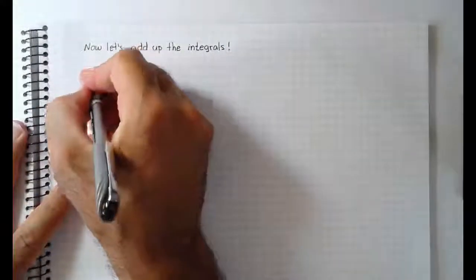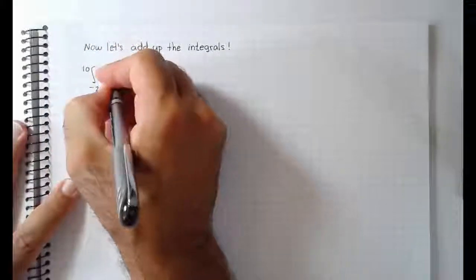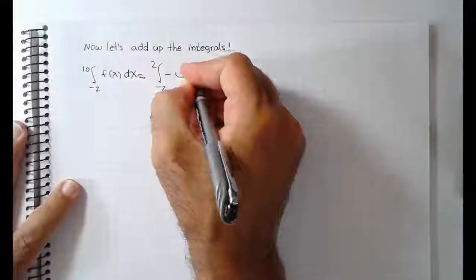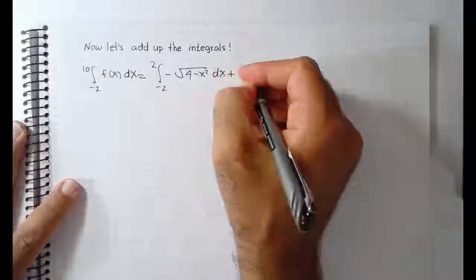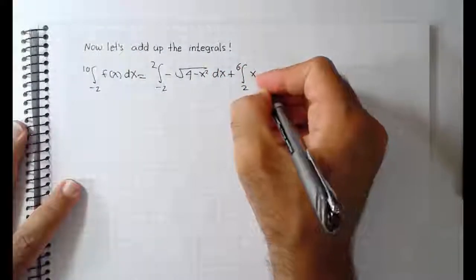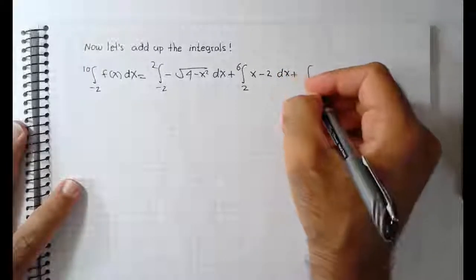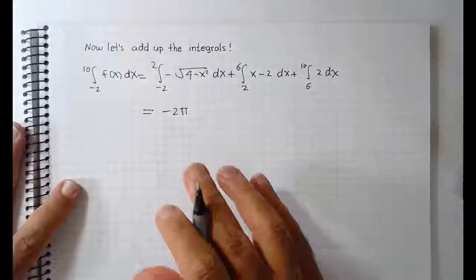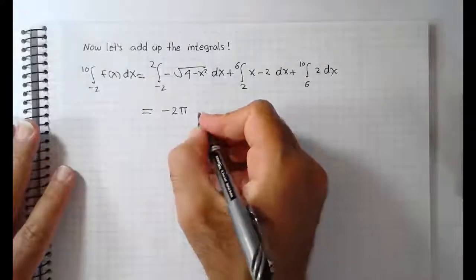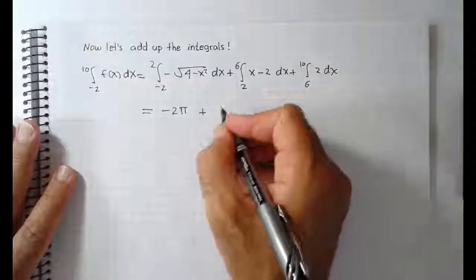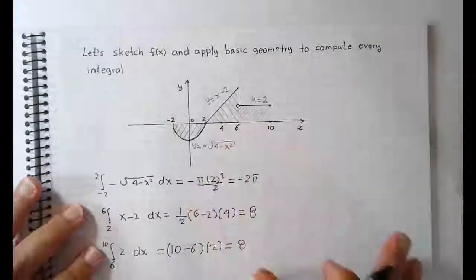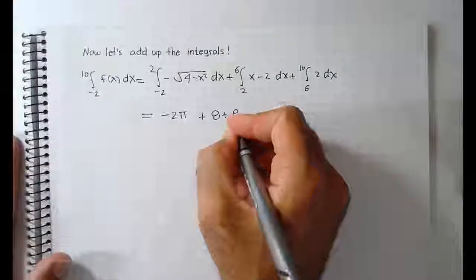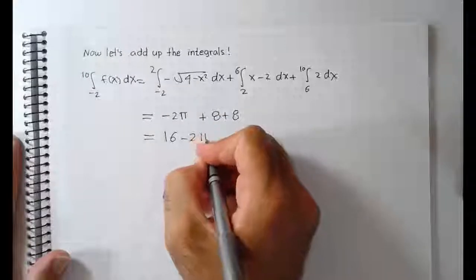So let's add up these integrals. The integral from minus 2 to 10 of f dx equals the integral from minus 2 to 2 of minus root of 4 minus x squared dx, plus the integral from 2 to 6 of x minus 2 dx, plus the integral from 6 to 10 of 2 dx. We found the first to be negative 2 pi, the triangle area came out to be 8, and the rectangle area came out to be 8 as well. So that's negative 2 pi plus 8 plus 8, which works out to 16 minus 2 pi. This is the answer.